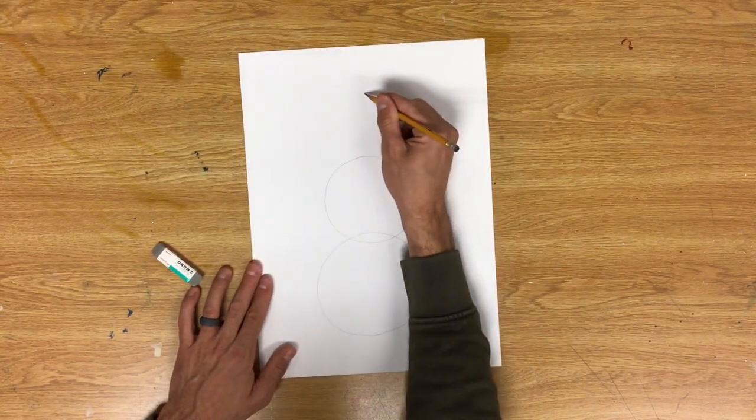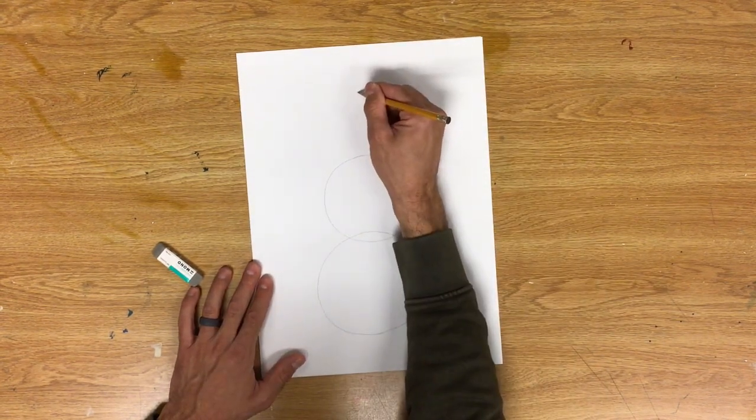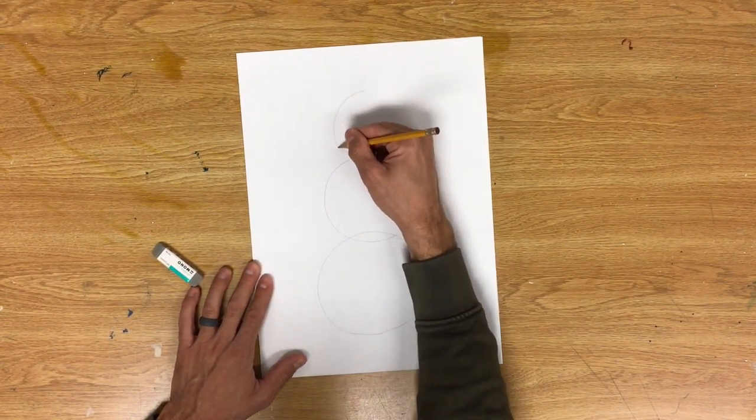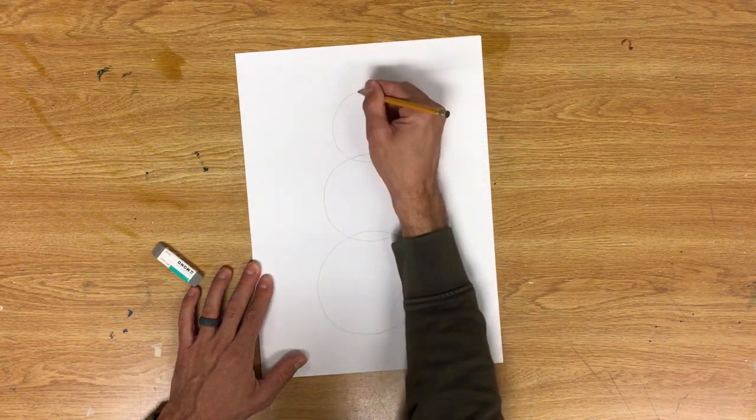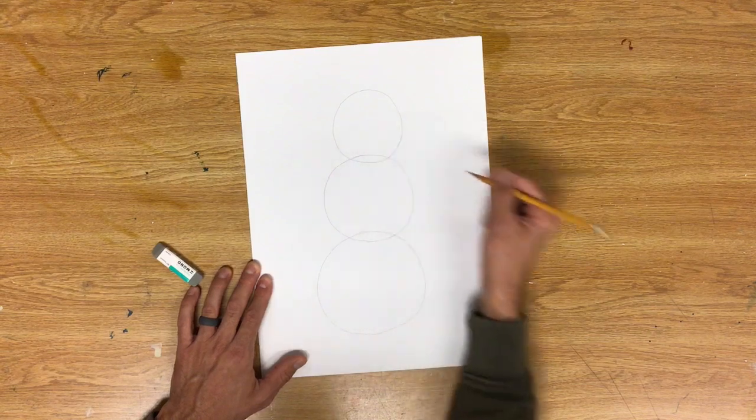Next step, I'm going to start by drawing my head circle. I'm going to overlap it. It's the smallest of the three circles. There we go.